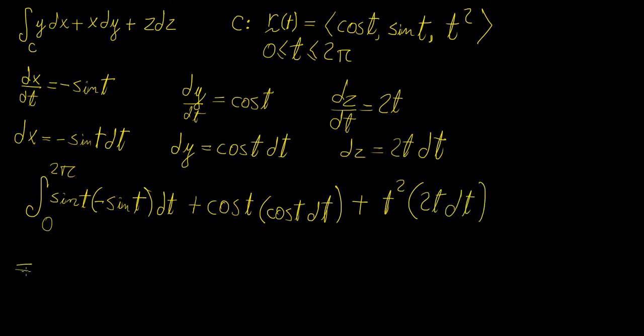So now we just regroup the terms, and let's see what we get. We're going to get minus sine squared t, then plus cosine squared t, plus t squared. But remember we have this times 2t, so this is actually going to be 2 times t cubed.